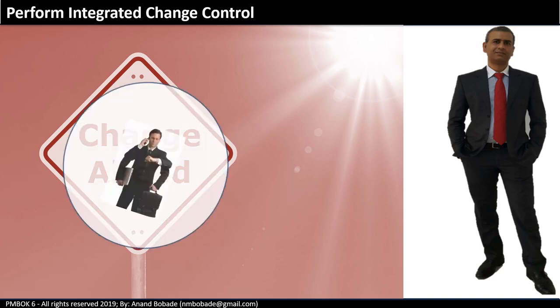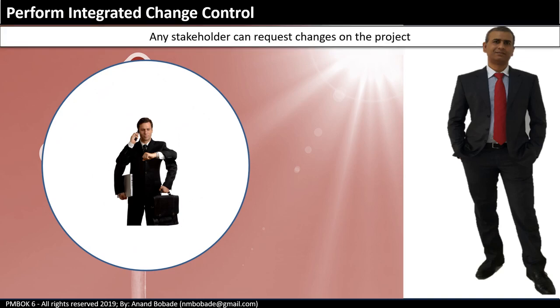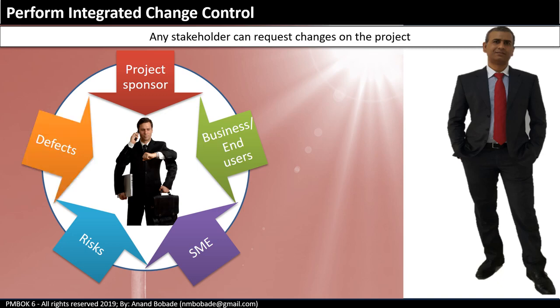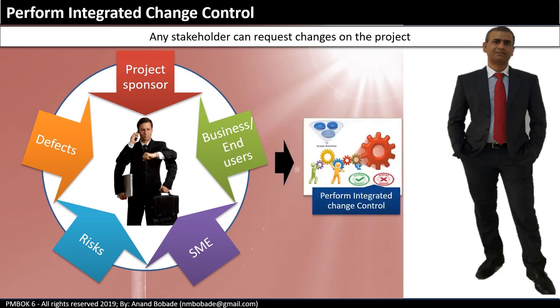Any stakeholder can raise a change request on the project. You might have often encountered a project sponsor, business users or end users, or a subject matter expert raising changes or requesting more functionalities as we progress. A lot of time, failed risk mitigation or a big defect found in the design may lead to raising a change request. All these change requests must be processed through the Perform Integrated Change Control process. Change requests are not necessarily bad — sometimes they give us a good opportunity to save cost or deliver faster.